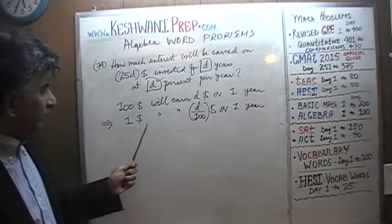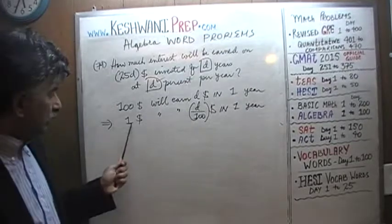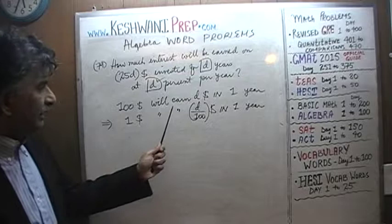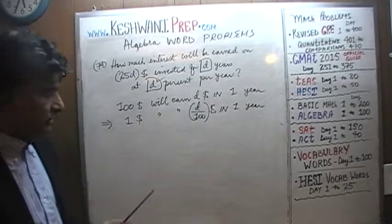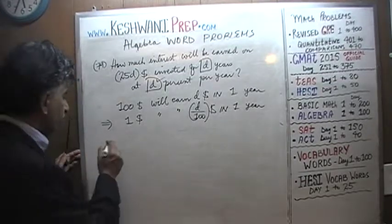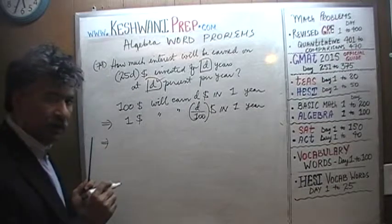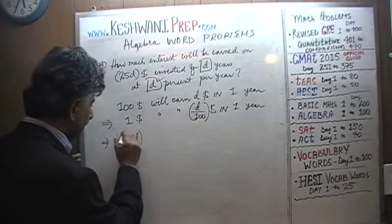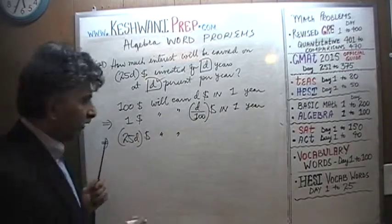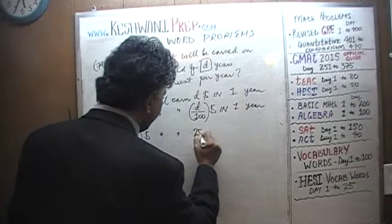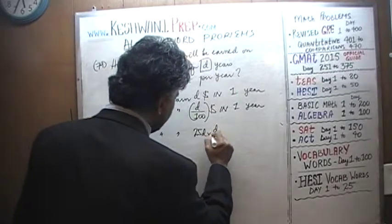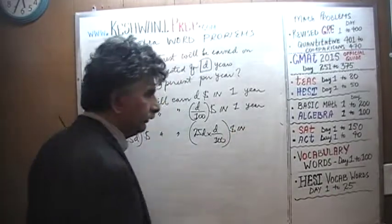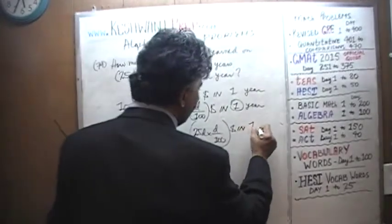So if $1 yields this much interest in one year, then $2 should yield twice as much, $3 should yield three times as much, $7 should yield seven times as much. Therefore, we are investing 25 times D dollars, and 25 times D dollars should yield 25 times D times D over 100 dollars — in one year.